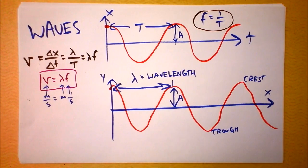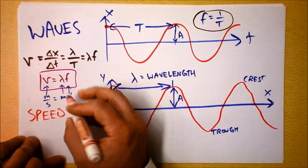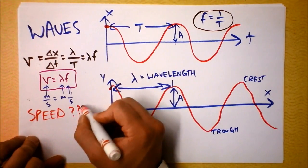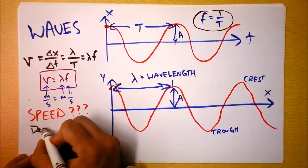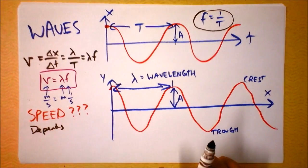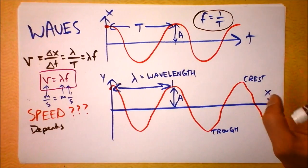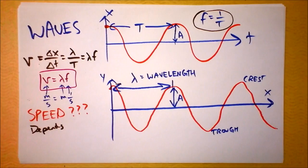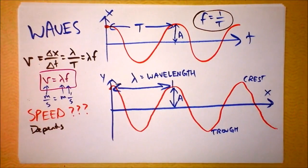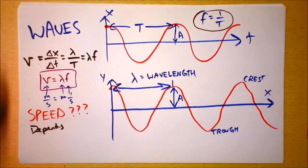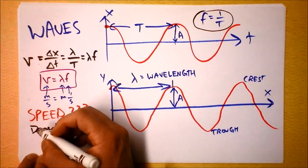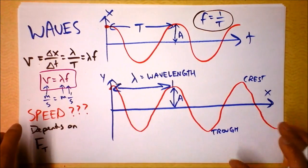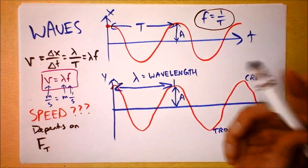How fast does a wave travel through a material? Let's identify what kinds of things that might depend on. If you imagine holding a rope, the tighter you pull it the faster the wave will go. If you pluck a loose rope it's kind of dangly — the wave moves slowly. So speed probably depends on tension.